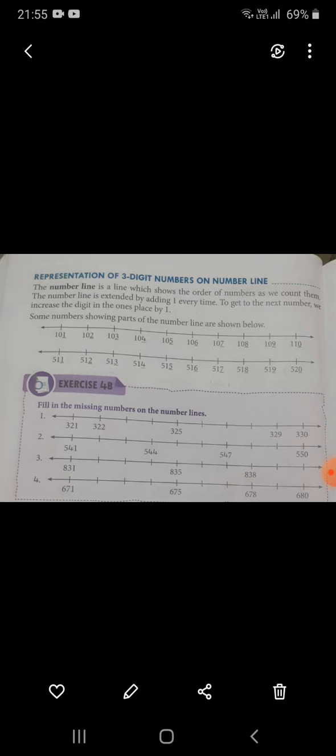So what actually is the number line? The number line is a line which shows the order of numbers as we count them. When we do the counting, it shows the numbers in a proper sequence or order. The number line is extended by adding 1 every time. It depends.